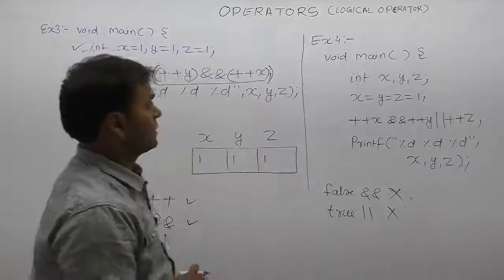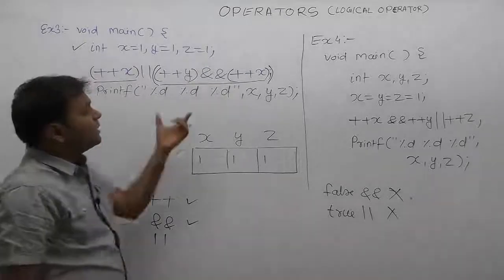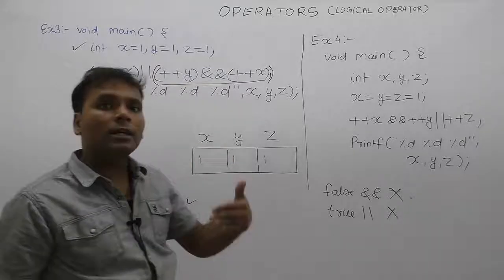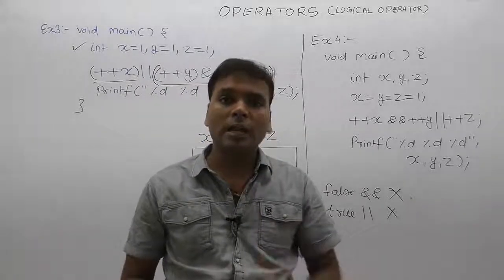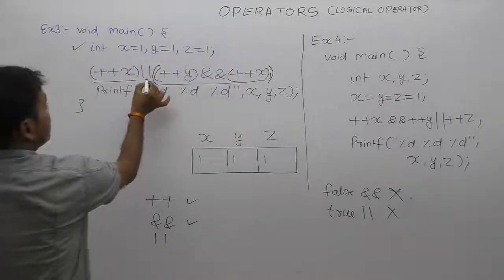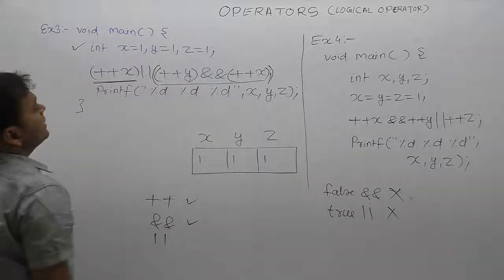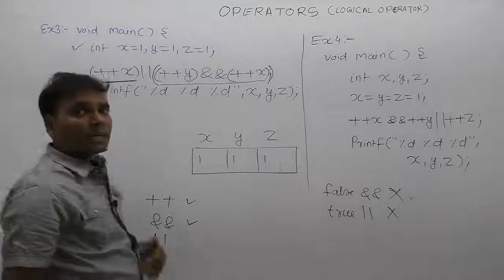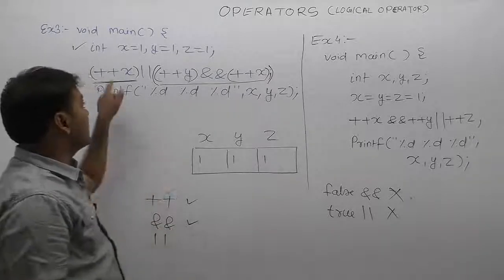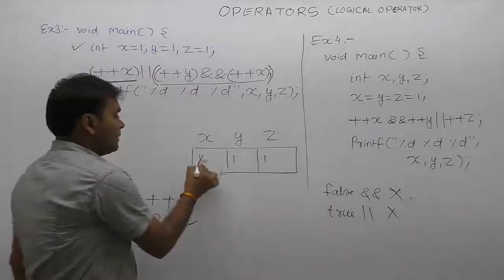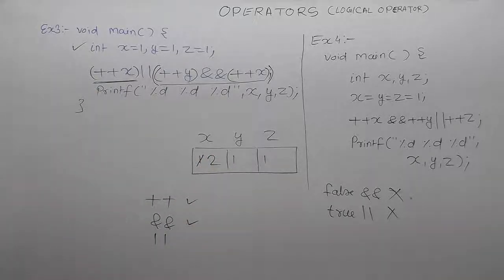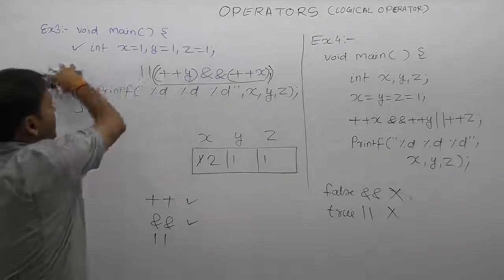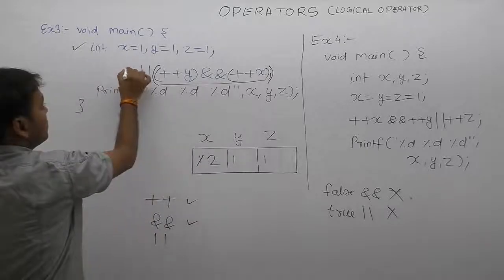In case of all operators, the highest priority operation is performed first — that is plus-plus x. This is pre-increment. Pre-increment behavior: सबसे पहले x में increment perform होता है, then the replaced value is used. According to pre-operation: पहले increment, then replacement. What is the replaced value of x? Current value becomes 2, therefore 2 is replaced.